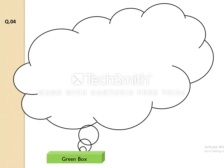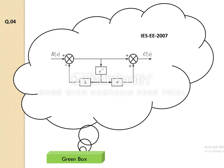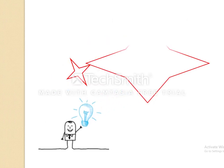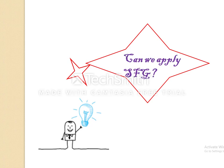The next question is from the IES 2007 paper. We need to find the transfer function for a given block diagram. This can be solved using block diagram reduction or by using SFG. Practicing SFG on these problems helps us solve quickly. By looking at the block diagram, all answer options A and B share the same numerator, and C and D share another. We will apply the SFG concept to solve this problem.